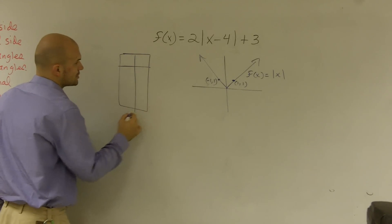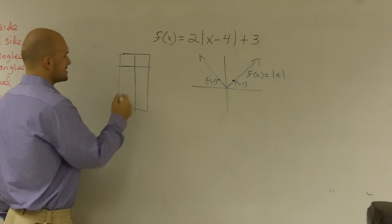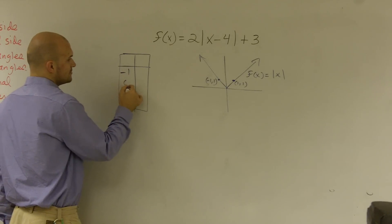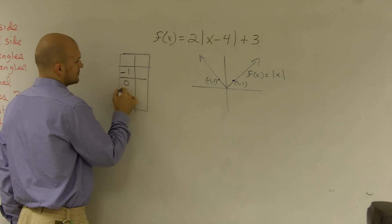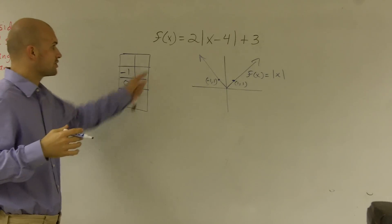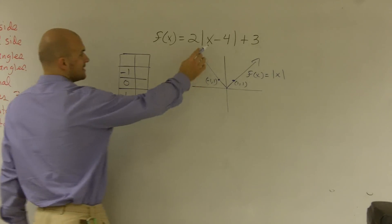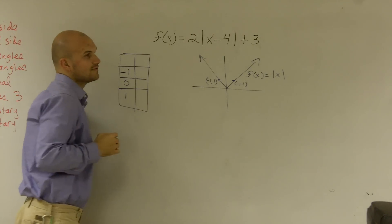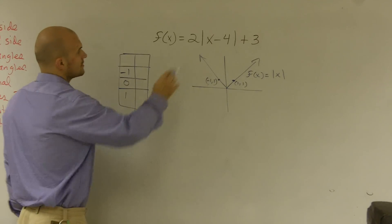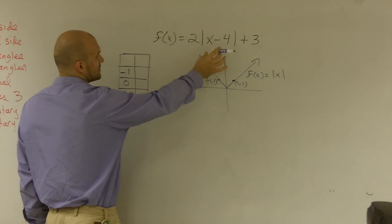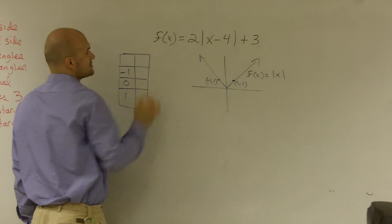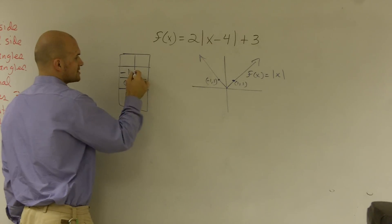But let's say I was going to go and pick two points, right? And let's say I just pick the points negative 1, 0, and 1, alright? And let's say I wanted to graph this equation. Well, if I did negative 1, negative 1 times negative 4 is a negative 5. Negative 5, absolute value is 5. 5 times 2 is 10, plus 3 is 13.